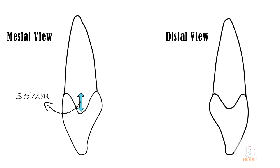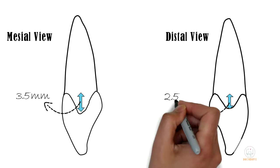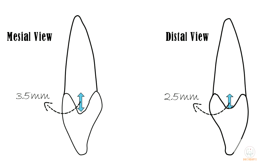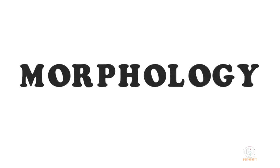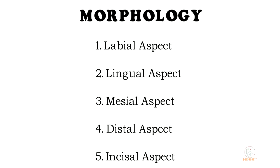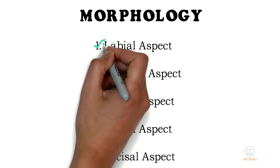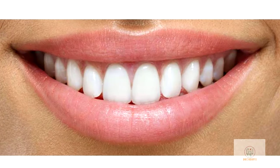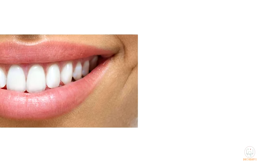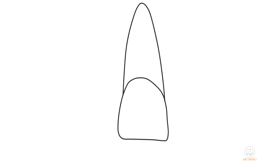The curvature of the cervical line is 3.5 millimeters on the mesial side and 2.5 millimeters on the distal side. The morphology of teeth is studied under five aspects. Let's start with the first aspect — the labial aspect, or the side of the tooth which is towards the lips.